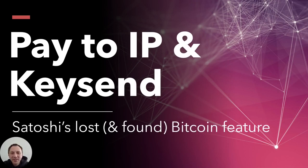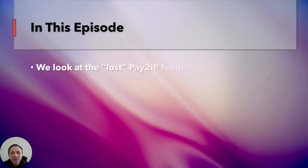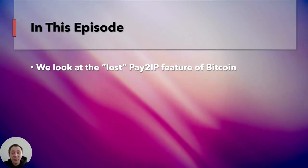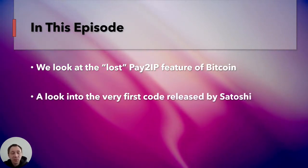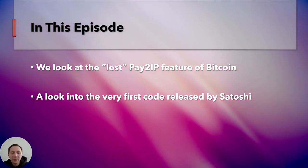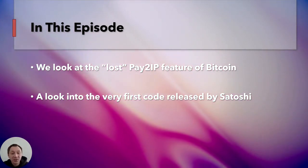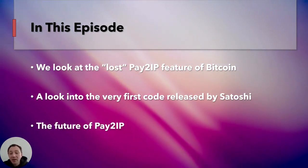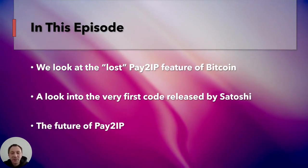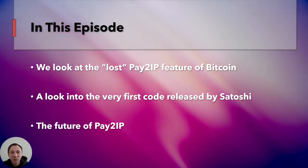Hello, welcome to my next episode. I'm going to be talking about Pay2IP and Keysend, Satoshi's lost and found Bitcoin feature. We're going to look at this feature of Bitcoin, why it's lost, and during this we're going to look at the very first code that was released by Satoshi. And of course, what does this mean for the future and what is the future of Pay2IP.